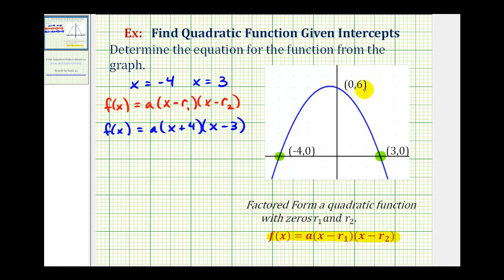Now we can use the y-intercept to determine the value of a. If our graph contains the point zero comma six, this means f of zero must equal six. When x is zero, the function value or y must be six.